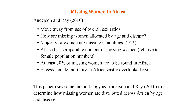What Debraj and I did in our earlier paper was ask: are they really all missing at birth? Because Sen was relying on overall sex ratios, and the arguments had been about sex ratio at birth. To do that, we moved away from overall sex ratios and asked the question: at what age are they missing?